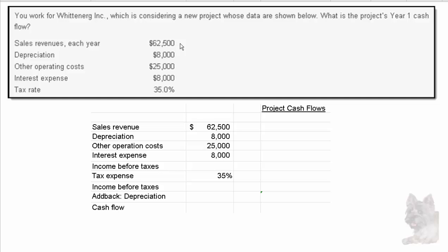They give us sales, depreciation, other operating costs, interest expense, and the tax rate. I've listed these down here. Now what we've got to do is figure out what the project cash flows are.